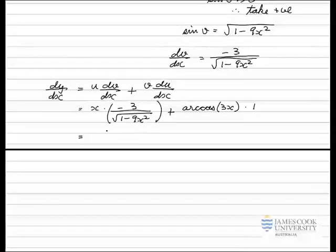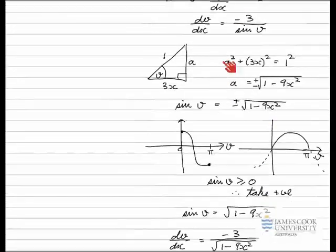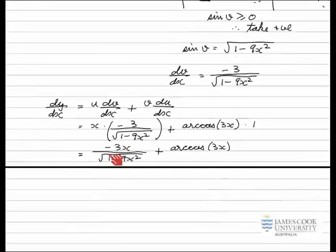We can simplify this final expression a little bit. Move the x inside the brackets, we get negative 3x all divided by the square root of 1 minus 9x squared. 1 times the arccos function is just arccos of 3x. And there's our final answer. The derivative of x times arccos of 3x is this expression here.